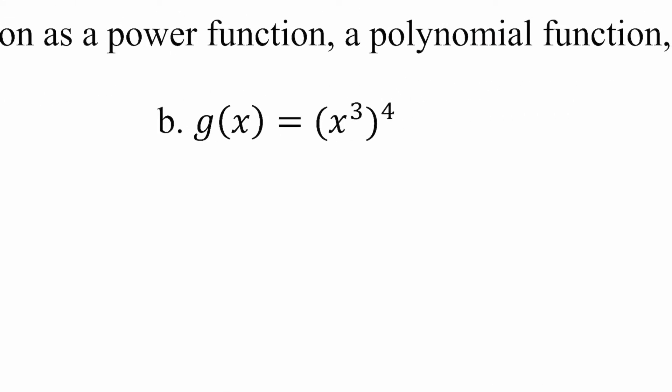This next example is a little more complicated. We have a power function raised to a power. We can use properties of exponents and turn this into x to the 12th power. So this still has the format of a power function — x raised to some numerical power — so we call it a power function. This technically qualifies as a polynomial as well, but we want to use the more narrow term when available.